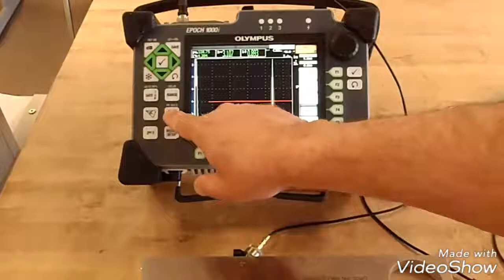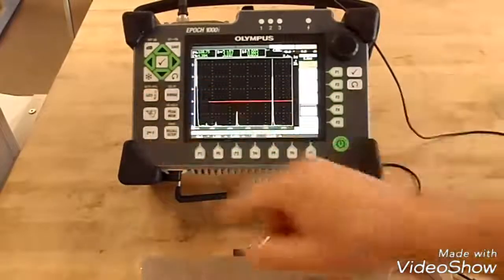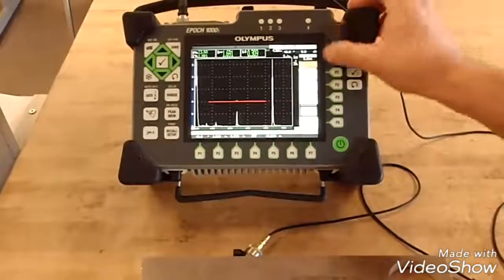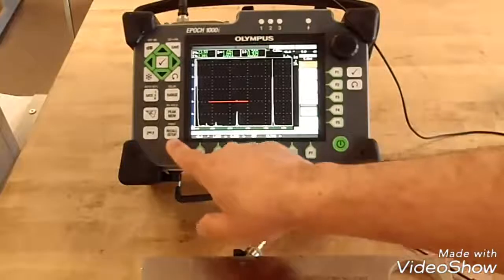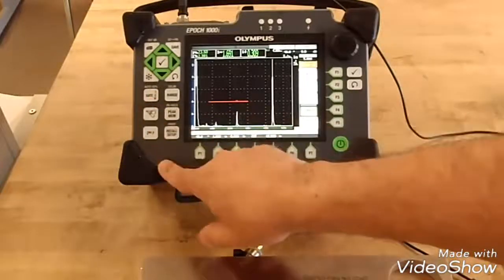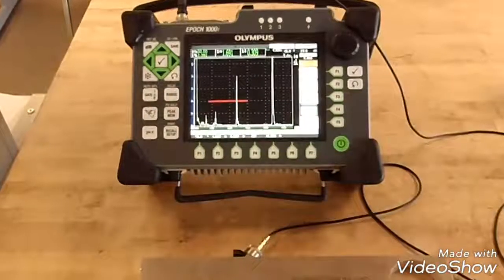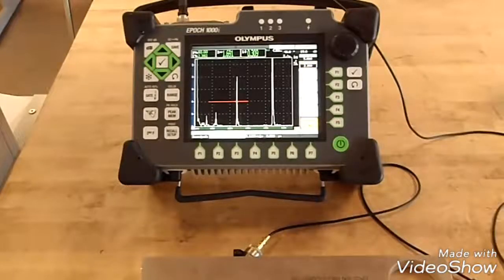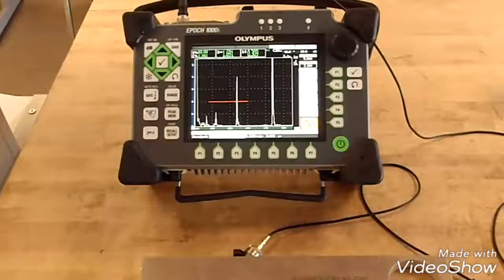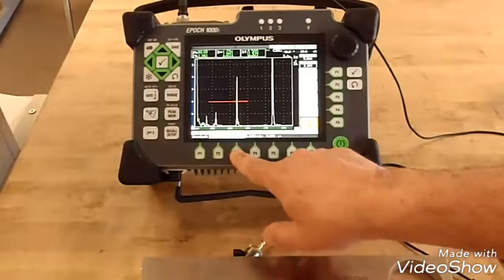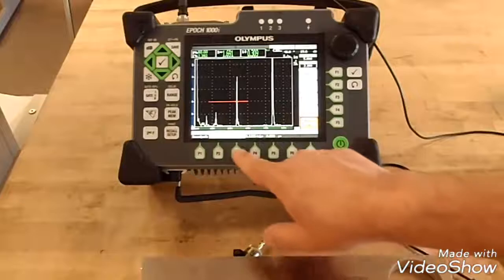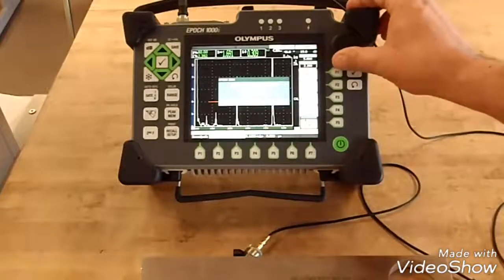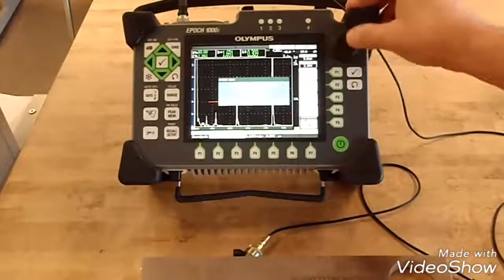I'm going to take my gate and turn down the width so it'll just capture that two inch radius. Do second function auto 80. This will take your amplitude to 80% full screen height. Go to auto cal. The first thing you want to do is calibrate your zero. You're going to tell the system from an initial pulse to that first two inch radius that it's two inches. That's called calibrating your zero.